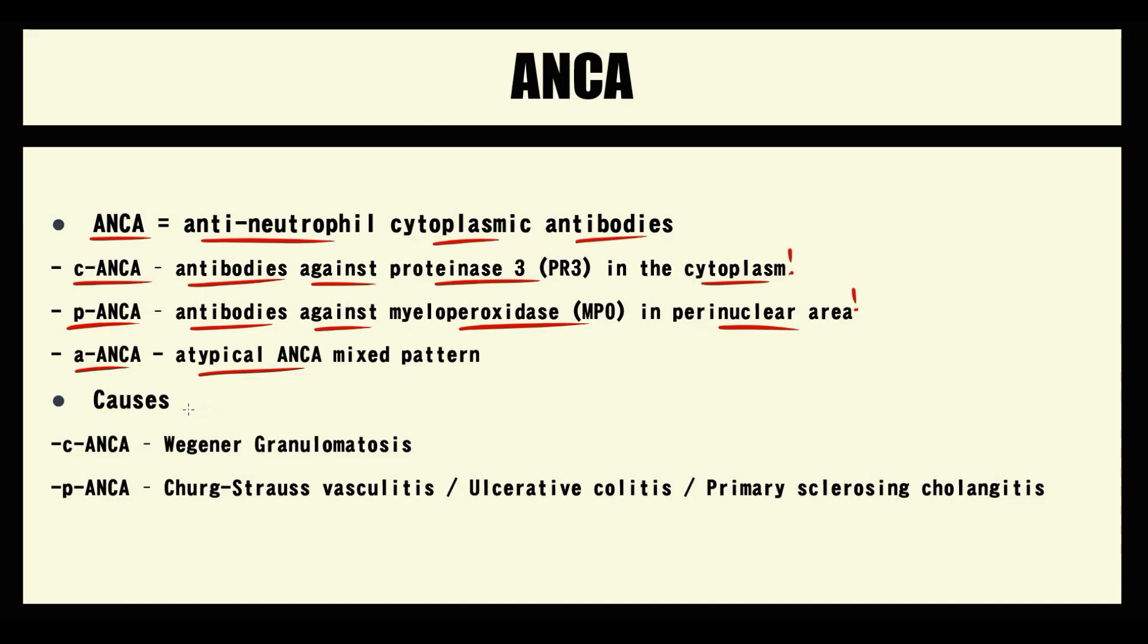ANCA antibodies are important because we use them as diagnostic markers. For example, C-ANCA is a common diagnostic marker for Wegener's granulomatosis, and P-ANCA is a marker for Churg-Strauss vasculitis, ulcerative colitis, and primary sclerosing cholangitis. So let's explain the difference between various subtypes of ANCA.